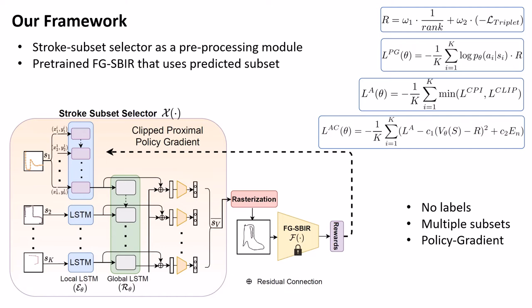The reward is a weighted summation of inverse of the rank and negative triplet loss as shown. An actor-critic version of proximal policy optimization with clipped surrogate objective is used to train our stroke subset selector as shown.